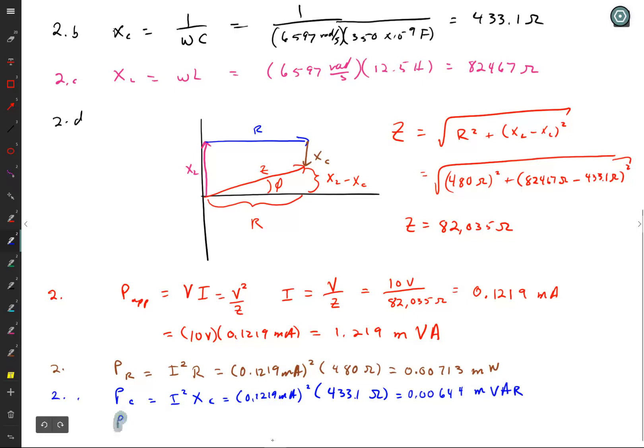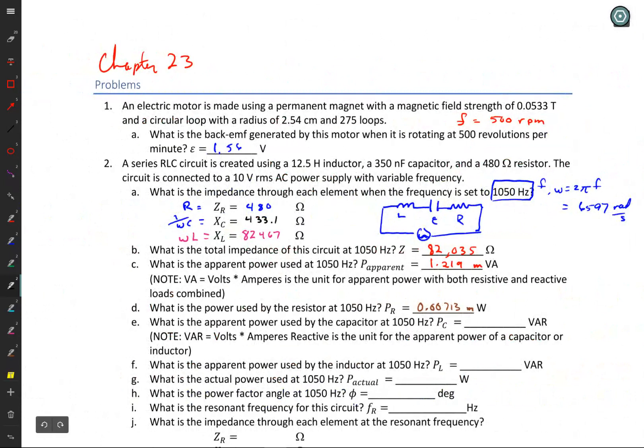And the power for the inductor, just doing this while I'm at it, power for the inductor is equal to I squared XL is equal to 0.1219 milliamp squared times 82467. And that is equal to 1.2254. Now here you notice, wow, the power for the inductor is bigger than the overall power. And the power there for the capacitor was 0.006435. So there I have the powers for all these things.